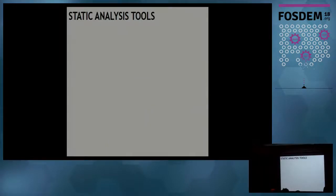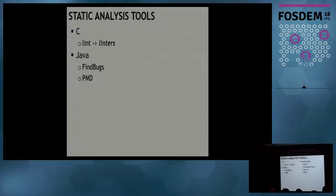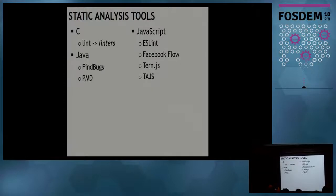If you've done some C programming, there is an old Unix tool called Lint — it was so defining that it gave its name to the whole family of source code analytics tools called linters. If you're a Java developer, you're probably aware of FindBugs or PMD. And obviously there are tools for JavaScript: there is ESLint, Facebook's Flow, the TypeScript system, and so on.